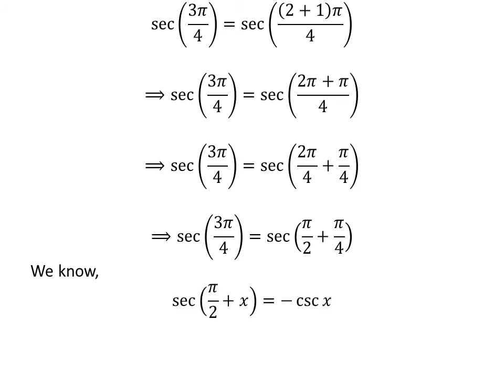We know the famous trigonometry identity: secant of (π/2 plus x) is equal to minus cosecant of x. The proof of this identity has been explained in the video appearing in the upper right corner, and the link is also given in the description. Applying this identity gives us secant of 3π/4 is equal to minus cosecant of π/4.